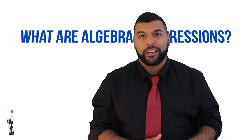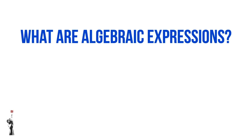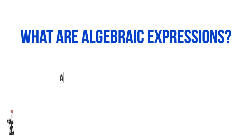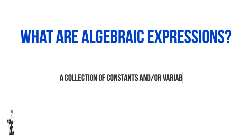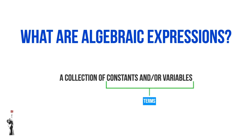We come now to the third part of our lesson: algebraic expressions. What are algebraic expressions? Algebraic expressions are a collection of constants and/or variables — or in other words, terms. In an algebraic expression, we could have one term, two terms, three terms, four terms, or many terms.